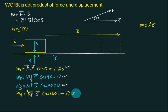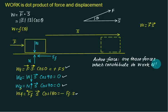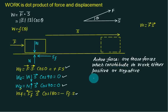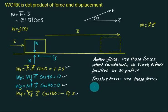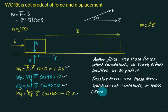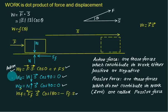Active forces are those forces which contribute in work — either positive or negative. Passive forces are those which do not contribute in work, meaning the work done is zero. In our example, the applied force F and friction are active forces. Weight and normal reaction are passive forces because they are perpendicular to displacement.